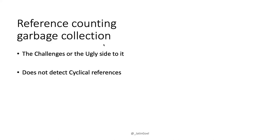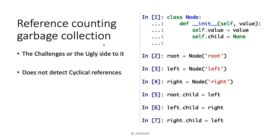There are challenges with reference counting. We talked about simple objects with straightforward references, but what about cyclical references? Let me show a small example — a simple class Node with a value and a child object.